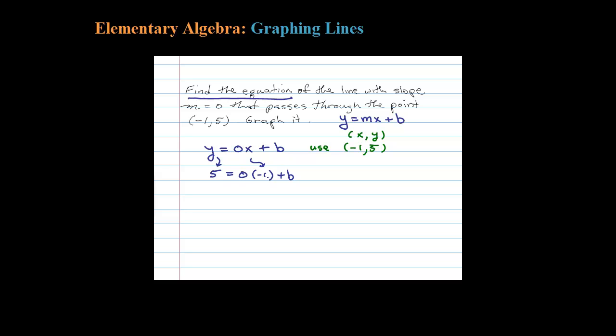0 times negative 1 is just 0, so 5 equals b. Once you've got b and once you have m, you can put it all together: y equals 0x plus 5. This is the actual equation. We can rewrite that as y equals 5.